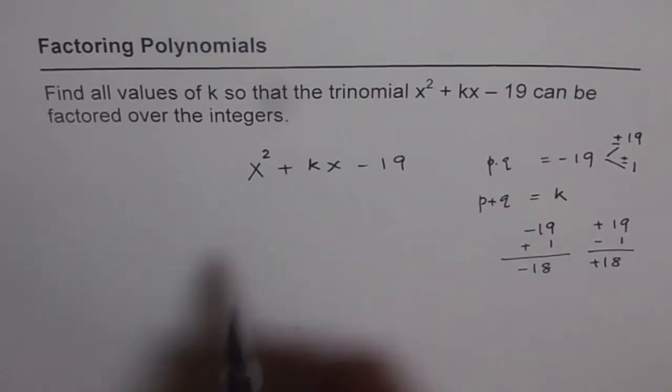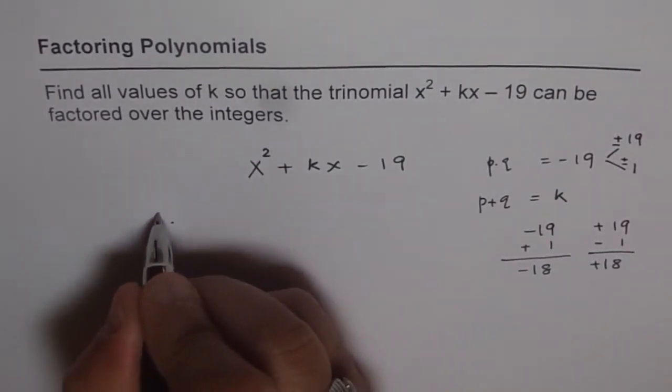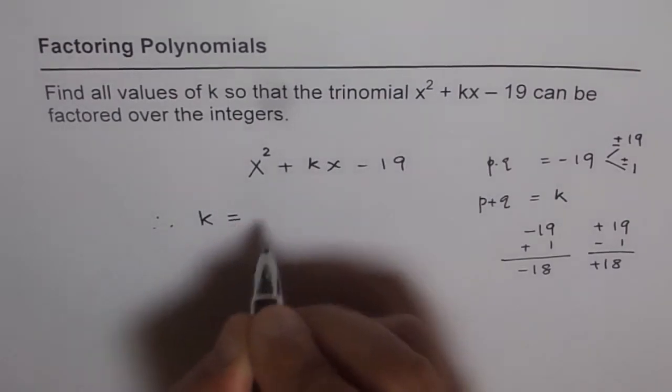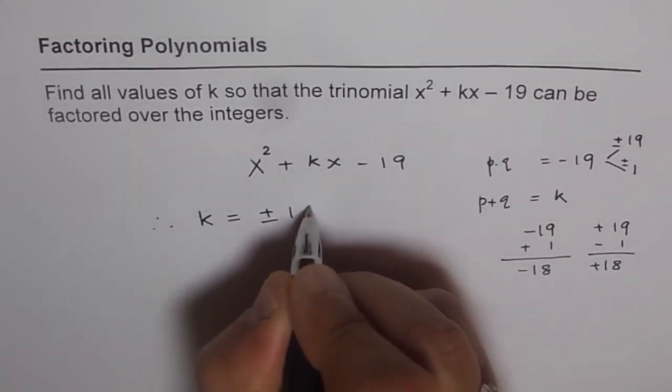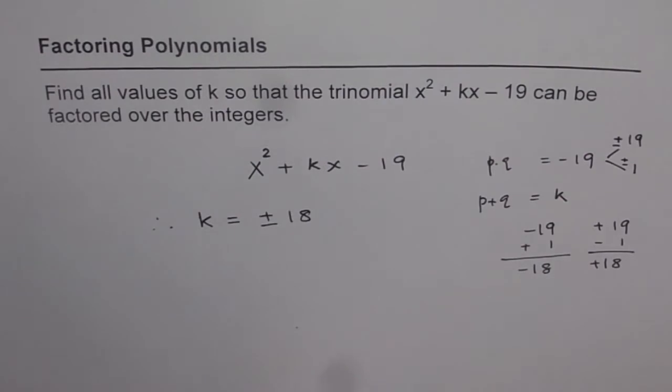So, these are the two possible values for k and therefore, we say k can be equals to plus or minus 18. So that this trinomial can be factored.